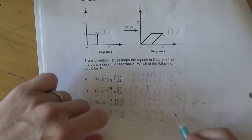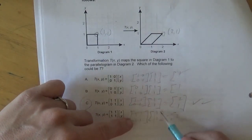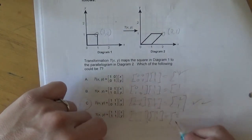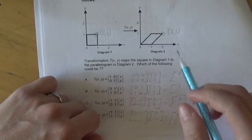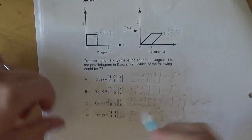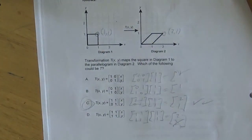So this guy here, 1 plus 1 is 2 — it looks good. But then here, 1 plus 1 is also 2, and that's not (2,1). So C is our answer.